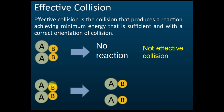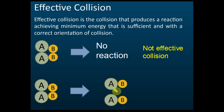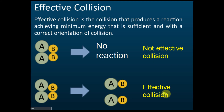If two reactants collide and produce a product, it means they overcame the minimum energy — the activation energy — and collided with the correct orientation. Only then will they produce a new product. This type of collision is called an effective collision. So the difference is: not effective collisions — no reaction; effective collisions — they produce a new product.